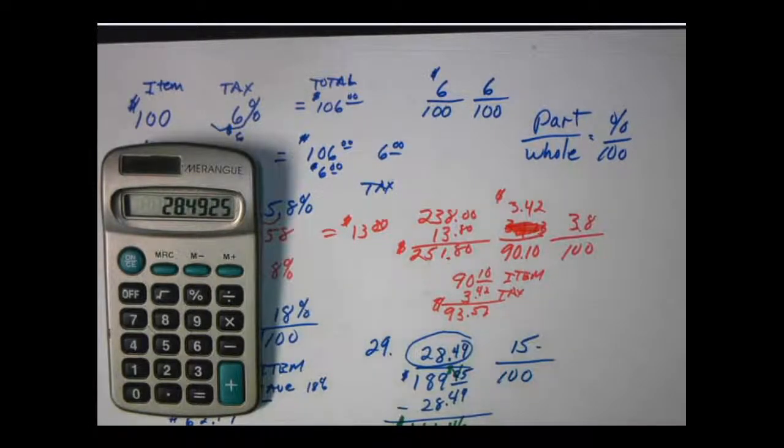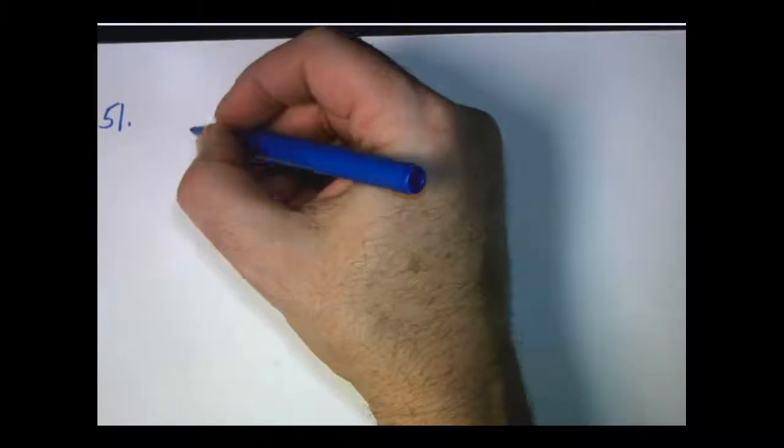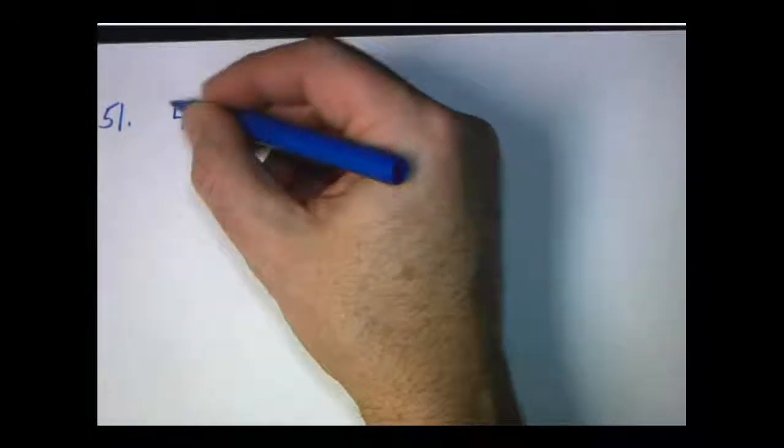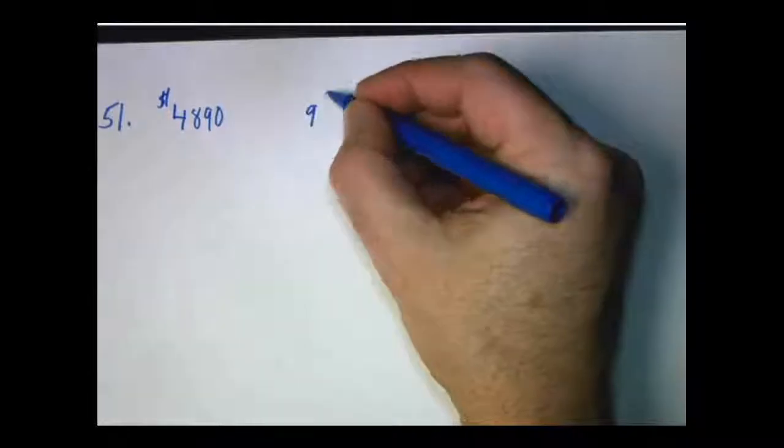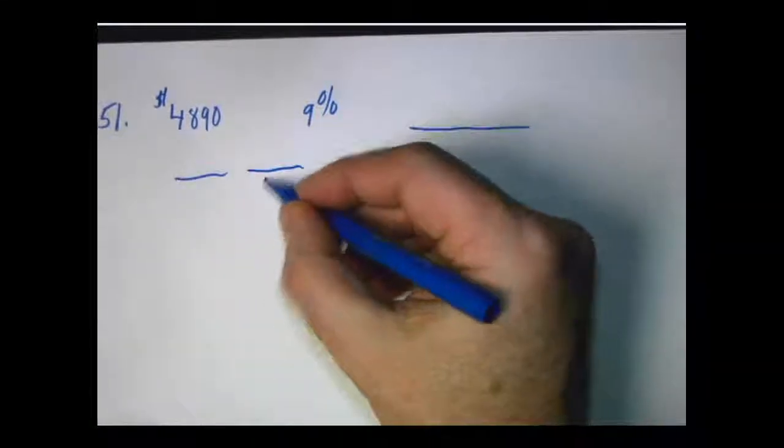Now our third objective is going to be dealing with a commission. A commission rate is very common in the workforce. Sometimes it's a base commission and then they get a part of how much they sell. Really depends on the setup from the store. But problem number 51 starts off with the problems dealing with commission. So we have $498. He gets a 9% commission rate. And we want to know how much he's going to make. So again with all of these, these are going to be part out of the whole again.